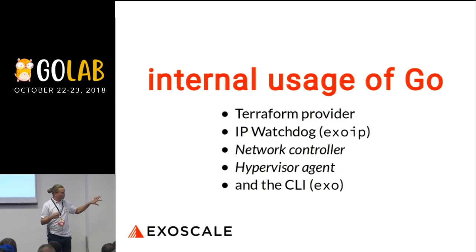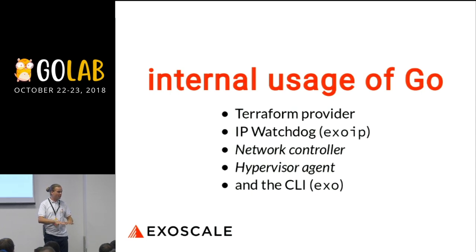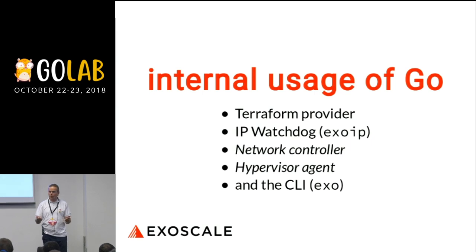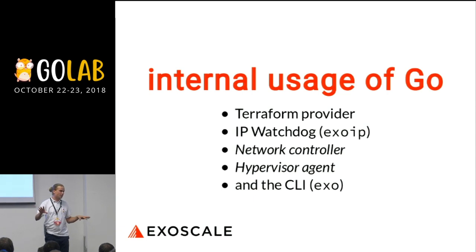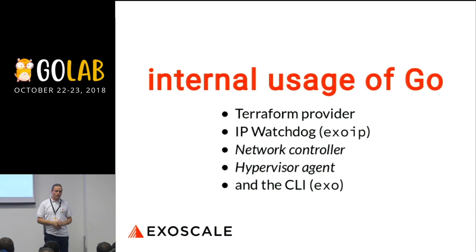And some internal stuff: the old networking layer. So more system code is done in Go. All the networking — when you spawn machines, they appear like they are in the same network. They have literally wires between them, even though they are in different hypervisors. And the agent on the hypervisor would communicate with the main system. It's also done in Go.